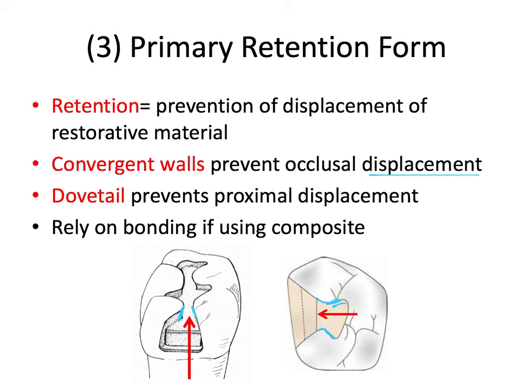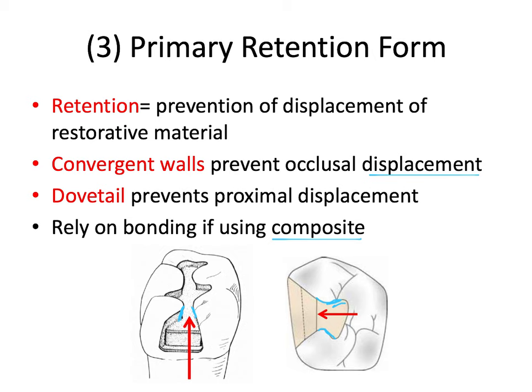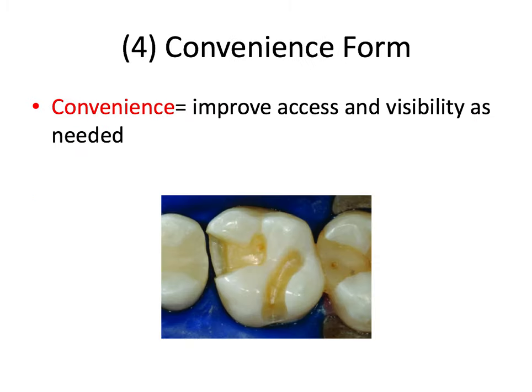We can rely more on bonding if we're using composite, which we'll talk about later in the series. But these convergence and dovetail features are absolutely essential if you're using amalgam. Note also that the 245 and 330 burs give you both resistance form — because their rounded ends naturally create rounded internal line angles — and primary retention form, because that pear-shaped occlusal convergence is built into the bur itself.